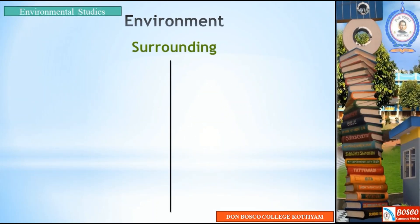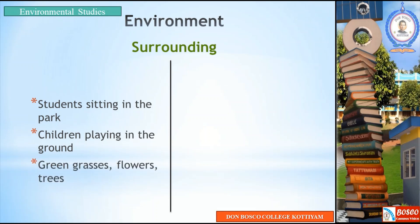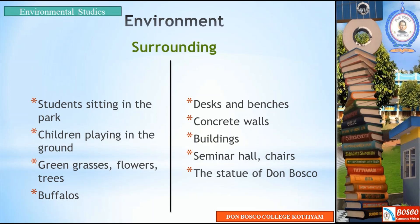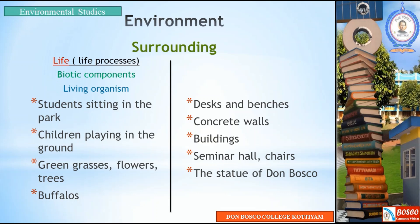Now that we have seen the objects in our campus, if we observe we can divide them into two groups. Students sitting in the park, children playing in the ground, green grasses, flowers, trees, buffaloes — all on the left side. The things on the left all have something in common: they have life in them, or they perform various life processes like eating, breathing, etc. So we call them all living organisms. They are also called biotic components, because the word 'bio' means life.